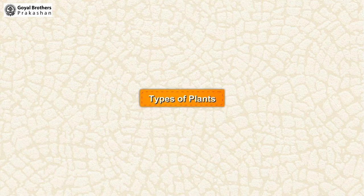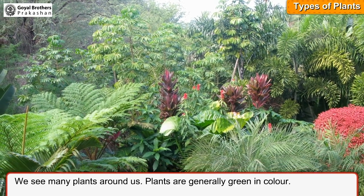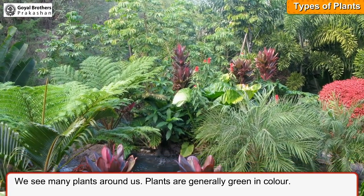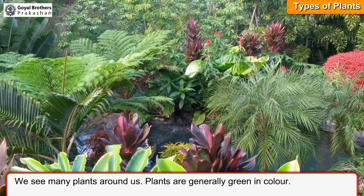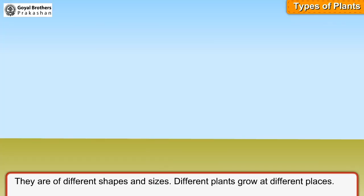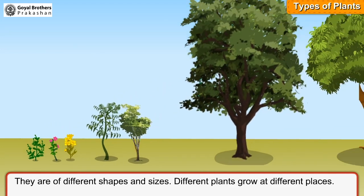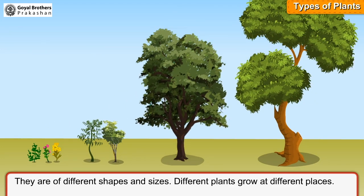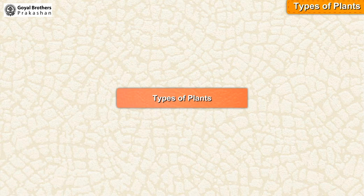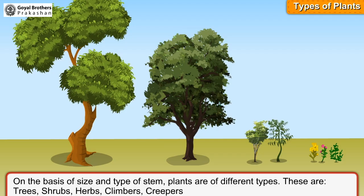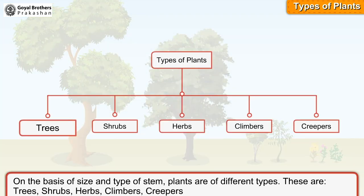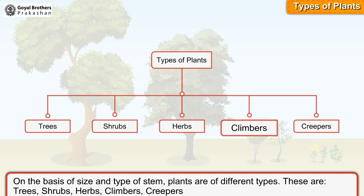We see many plants around us. Plants are generally green in color and are of different shapes and sizes. Different plants grow at different places. On the basis of size and type of stem, plants are of different types: trees, shrubs, herbs, climbers, and creepers.